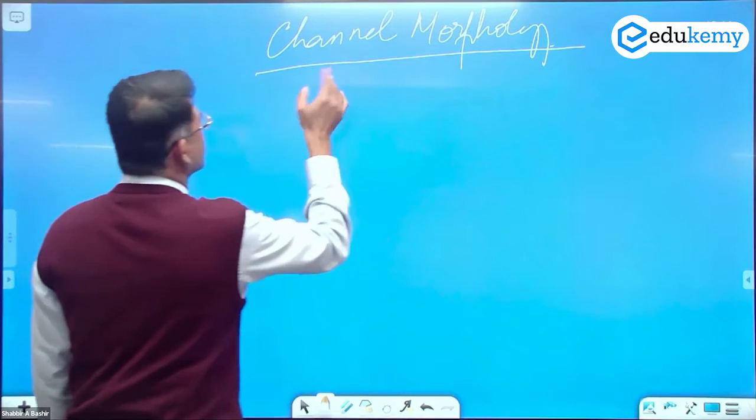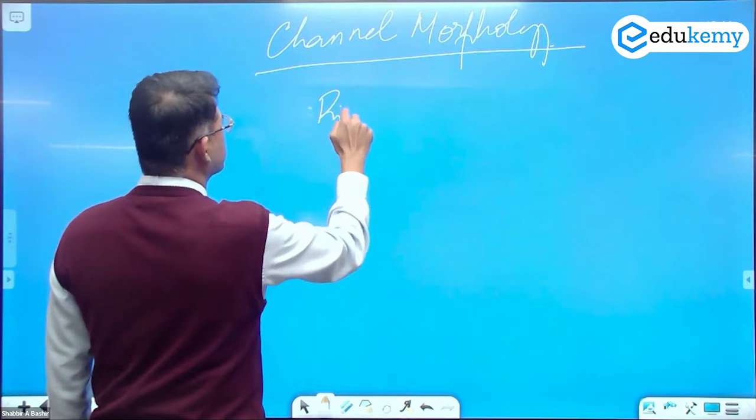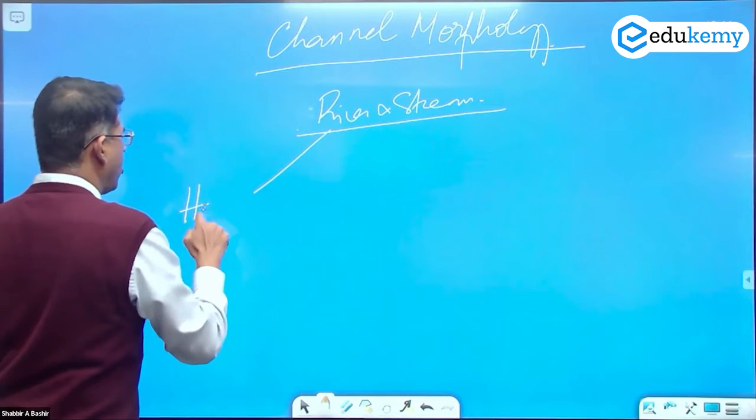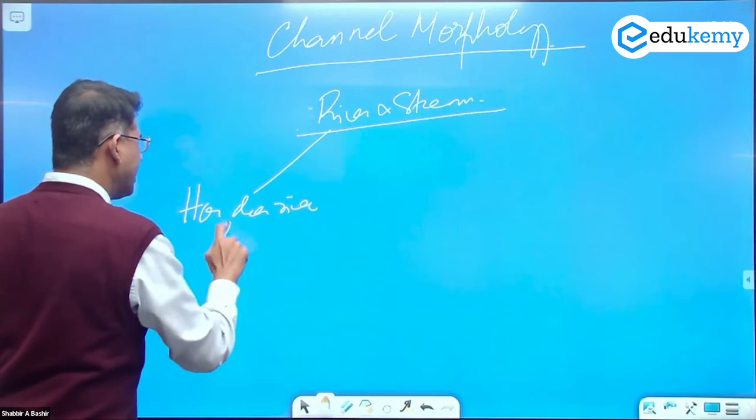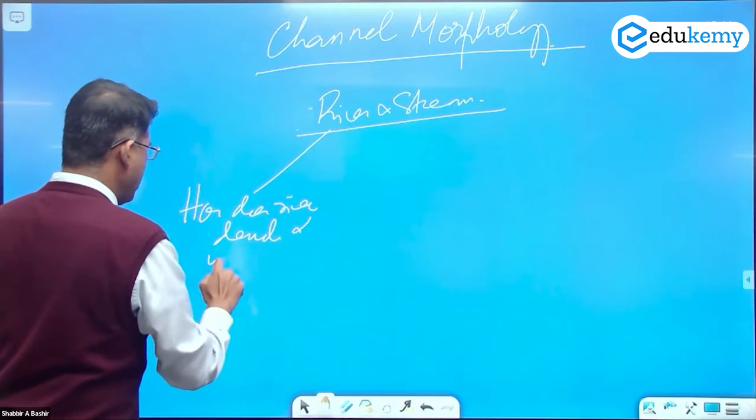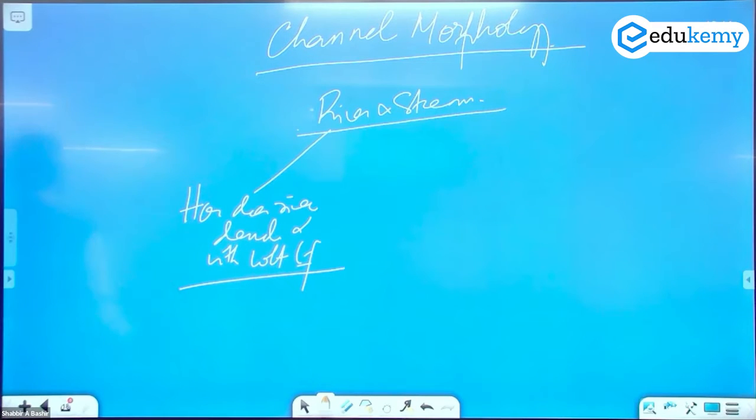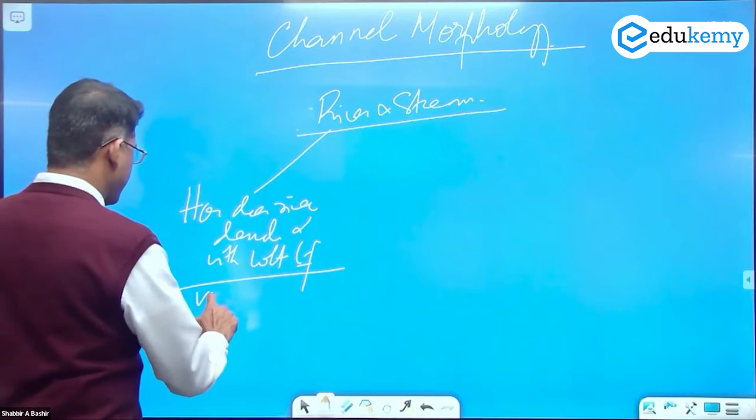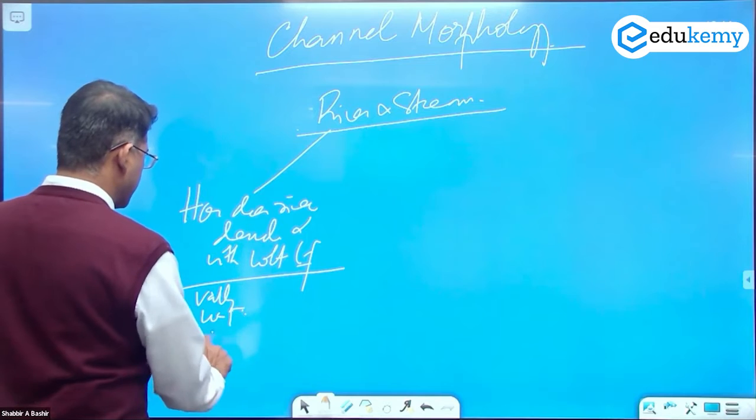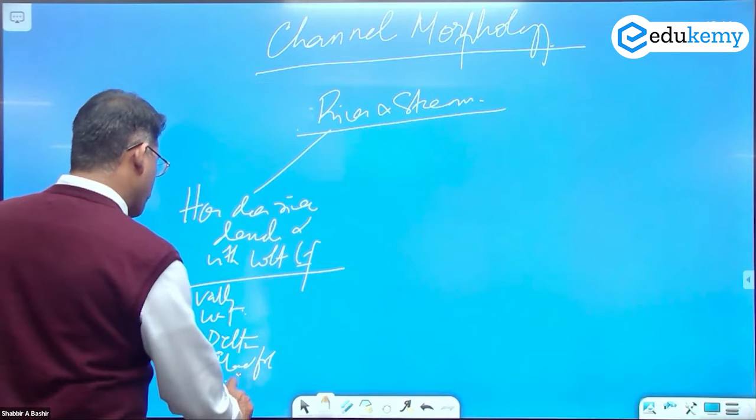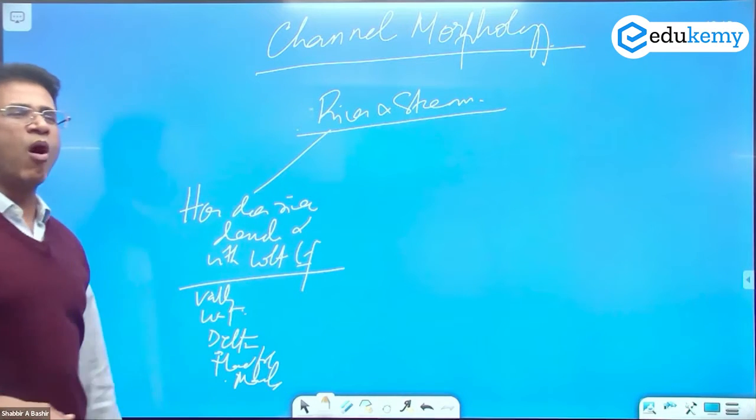So essentially I am studying rivers and streams. The different ways of studying - understand this first. One way of studying is how does a river denude and with what landforms. How does the river do erosion and deposition, and what are the names of landforms? There are valleys, there are waterfalls, there are deltas, there are flood plains, there are meanders. I make a list of what are the landforms of rivers - that's one type of study.